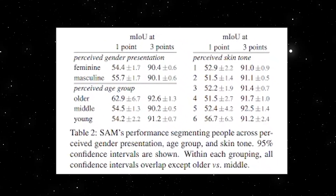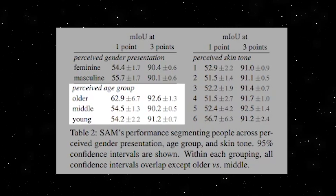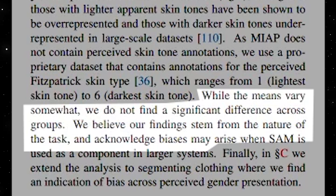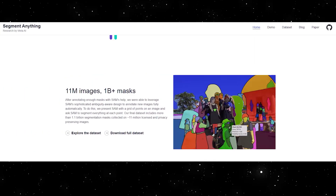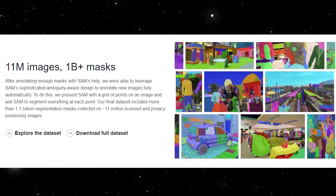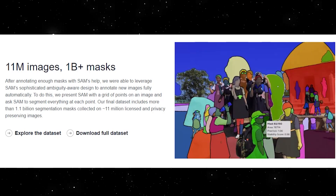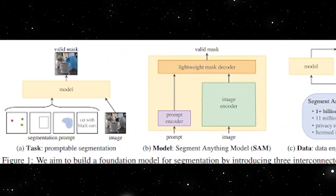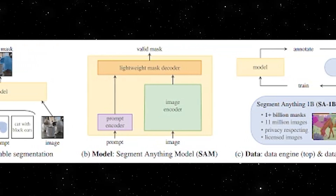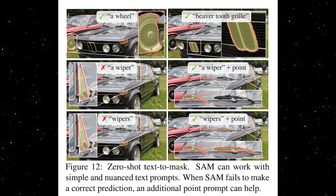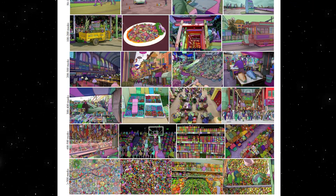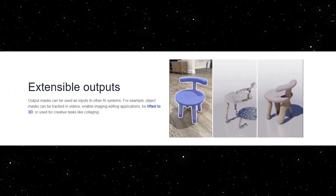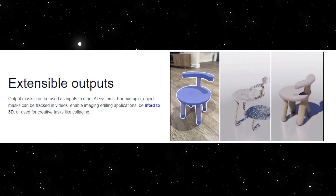Furthermore, the model's performance was analyzed across perceived gender presentation, perceived skin tone, and perceived age range of people. The results showed that SAM performs similarly across different groups, ensuring that the dataset is more equitable for real-world use cases. The SA-1B dataset has the potential to significantly impact the AI research community. By making this dataset available, the Segment Anything project hopes to accelerate research into segmentation and more general image and video understanding. Researchers can use this data to train foundation models for image segmentation, and it could serve as the basis for new datasets with additional annotations, such as text descriptions associated with each mask. The promptable nature of SAM makes it a valuable component in larger AI systems, enabling composition and extensibility for various tasks. By combining SAM with other AI techniques, we could unlock AI systems capable of understanding images at the pixel level and higher-level semantic understanding of visual content.